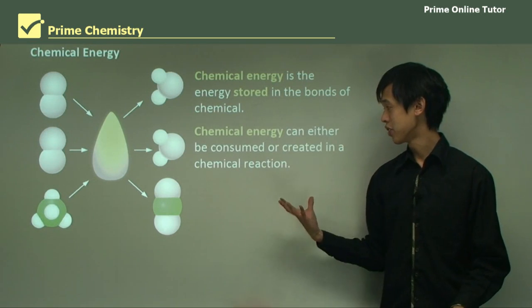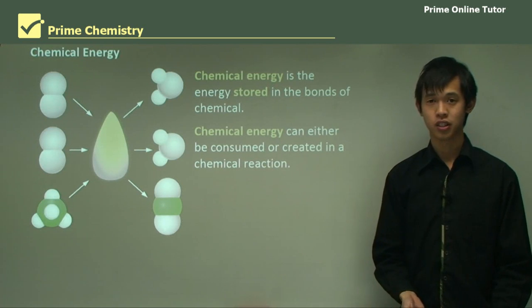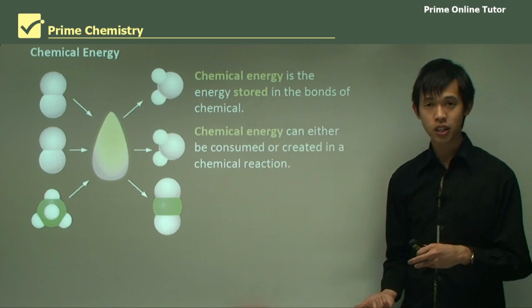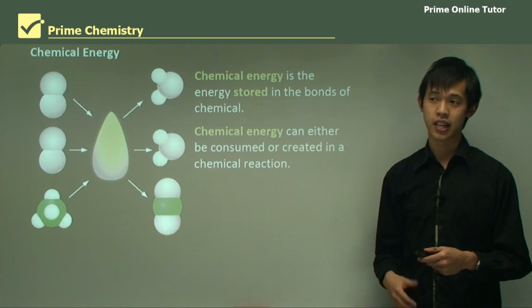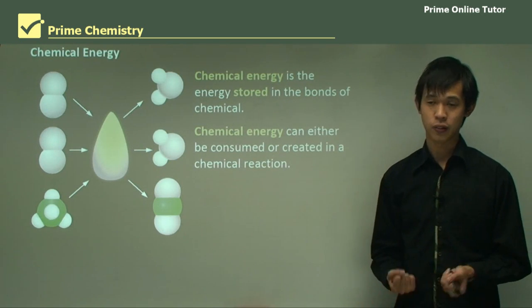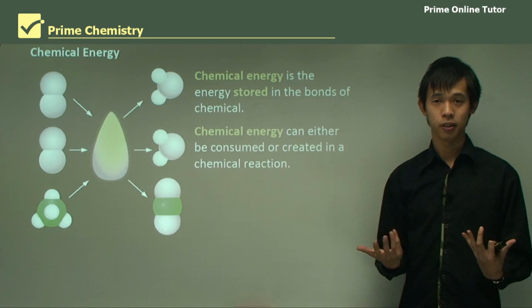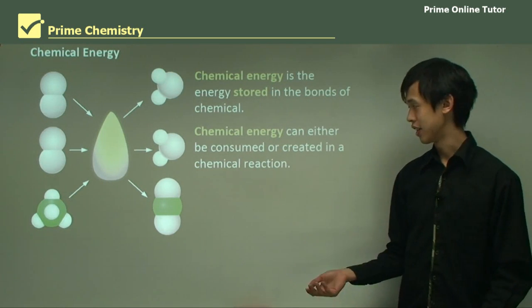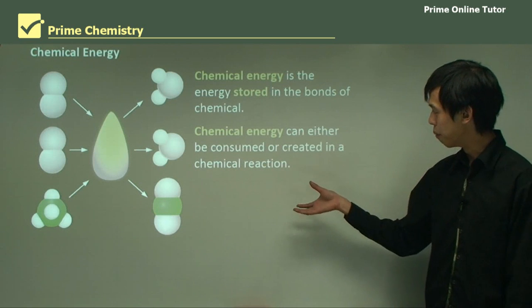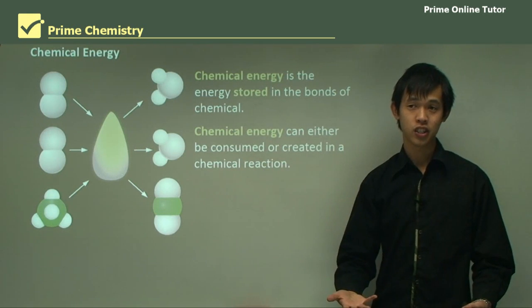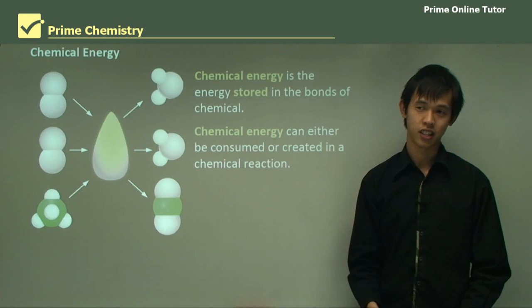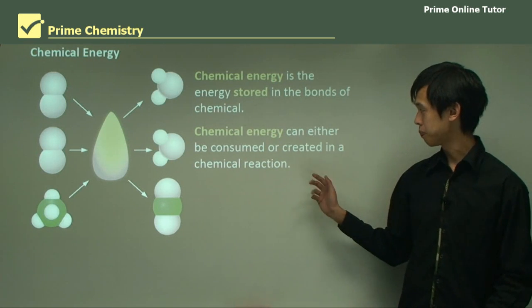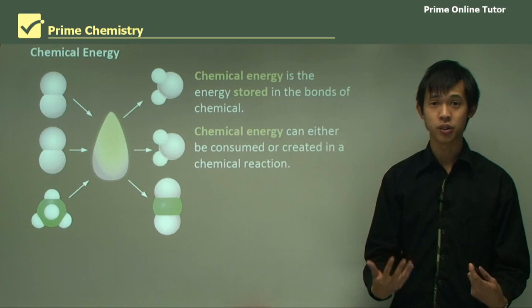So chemical energy can either be consumed or created in a chemical reaction. You can have chemical energy being consumed in the sense that it will be used up for something else. If you think about your body, you eat food which has chemical energy, and then you run around, play sport or whatever, think about things. And that consumes that chemical energy to give you some other form of energy in the motion or electrical impulses in your brain. So that's a way in which it can be consumed.